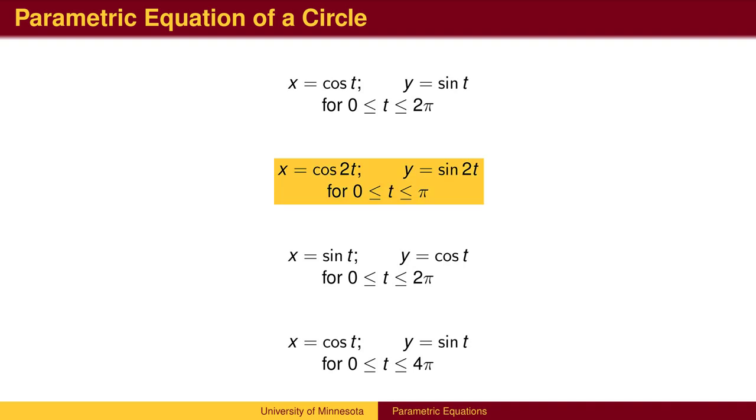In the second equation, you may think you get a different graph, but in fact, we get the same graph. When t equals π/4, then 2t equals π/2, and the x value will be 0 and the y value will be 1. All that has happened is we reach the top of the circle twice as fast.